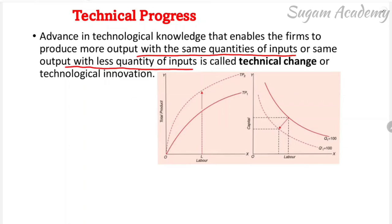Now let's look at the first diagram. The Y-axis shows total product and the X-axis shows labor.